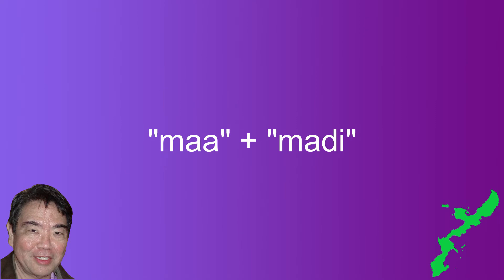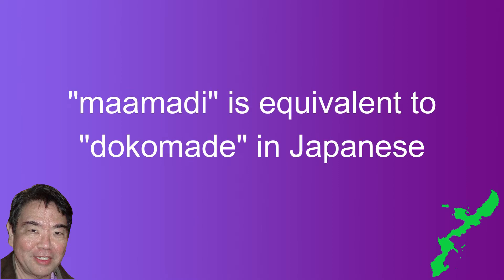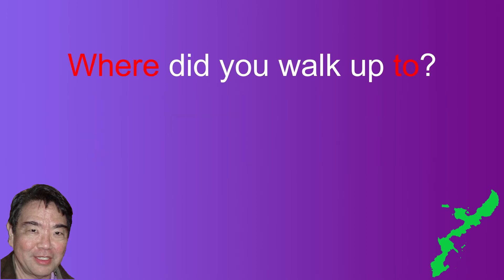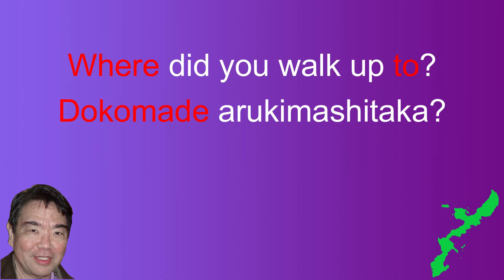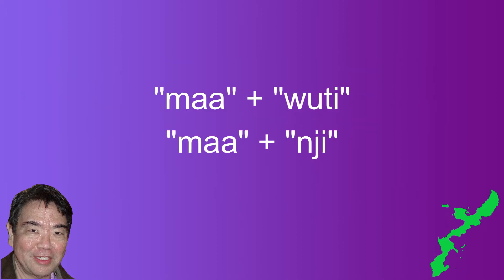The next example is "ma" used with the sentence particle "madi," which we covered in video 44. "Ma madi" means "up to where," equivalent to Japanese "doko made." The example is "where did you walk up to?" In Japanese: "doko made arukimashita ka." In Uchinaguchi: "ma madi achaga" in casual form and "ma madi achabitaga" in polite form.